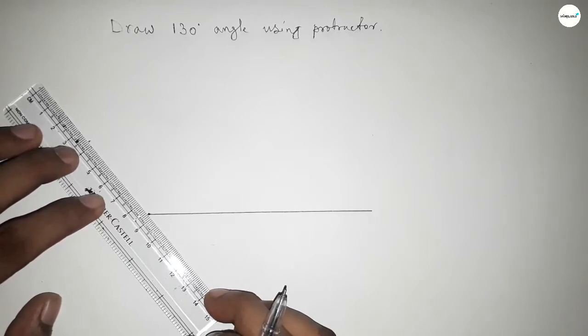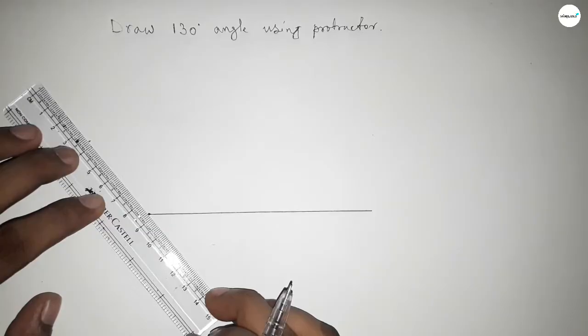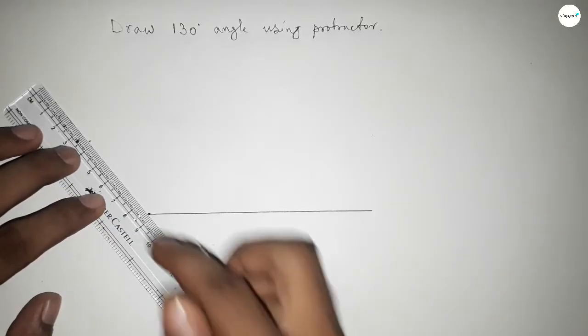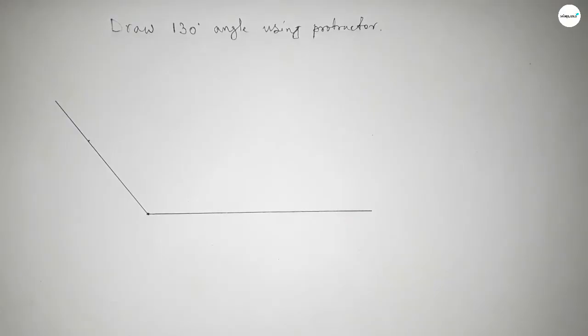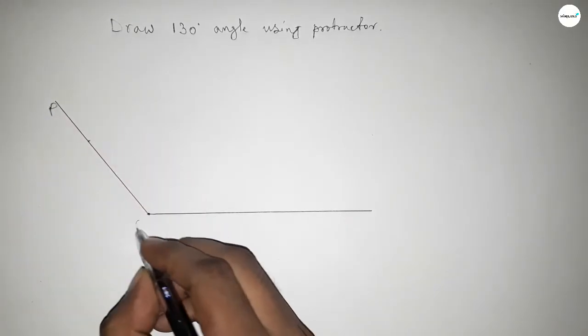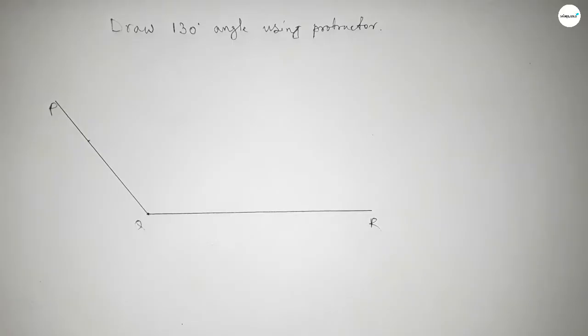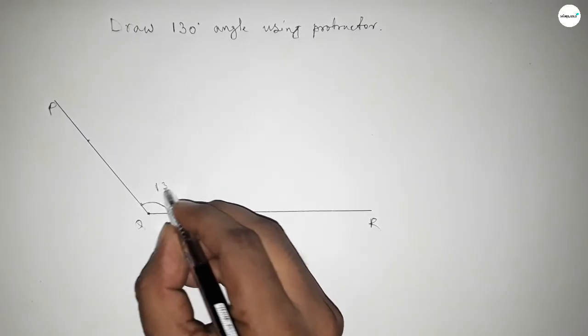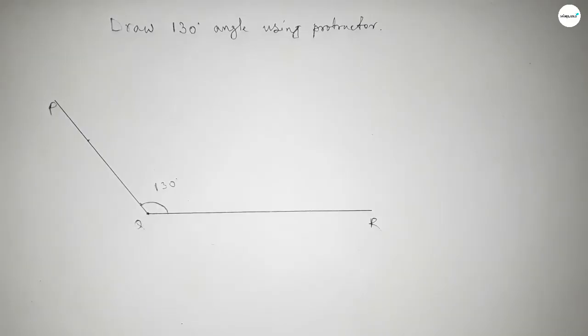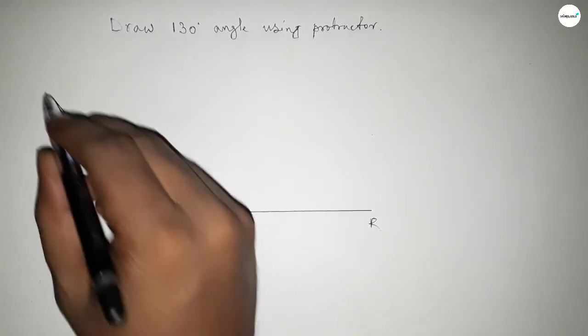Now joining this to get the 130-degree angle. So we got the 130-degree angle. This is P, Q, and this is R. So angle PQR equals 130 degrees.